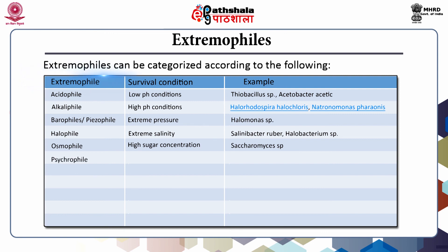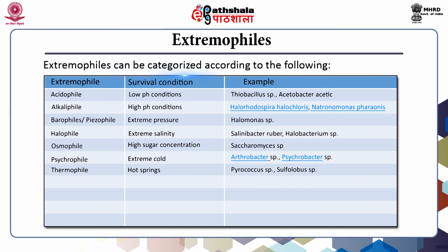Psychrophiles are another group of extremophiles growing under extreme cold conditions — examples include Arthrobacter and Psychrobacter. Thermophiles are microbes that grow in hot springs — examples include Pyrococcus and Sulfolobus species. Another group are solvent-tolerant microbes, which grow in the presence of solvents or in non-aqueous conditions, and Pseudomonas is a wonderful example for this group.